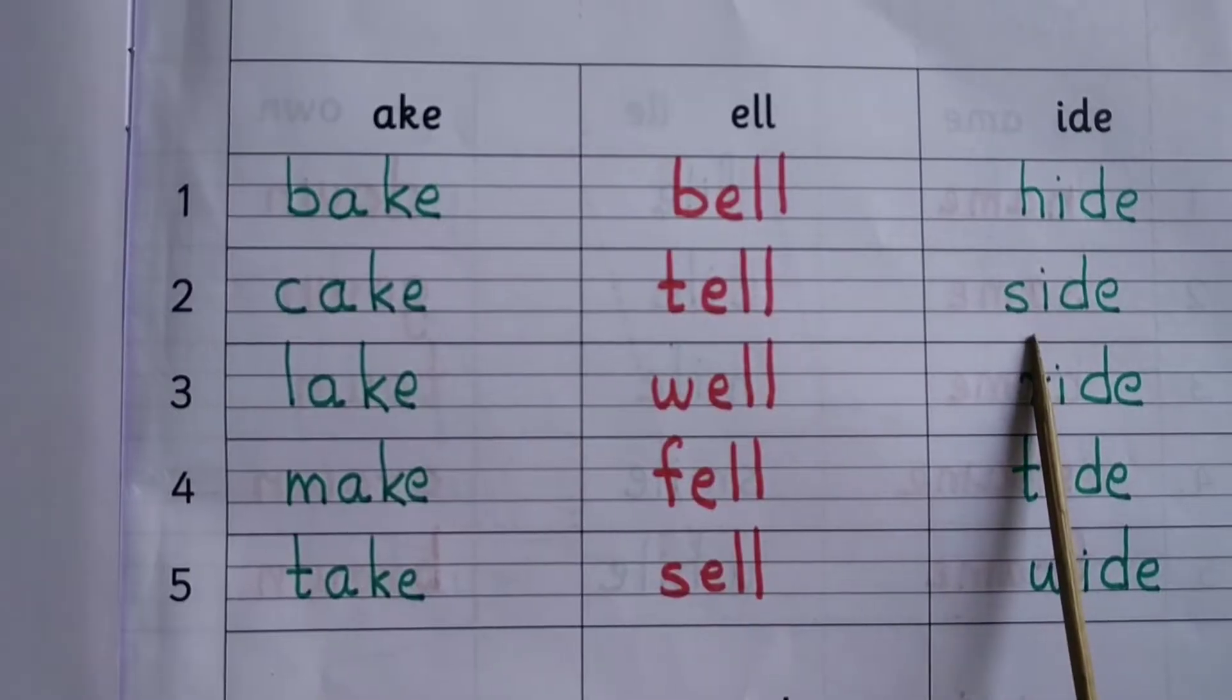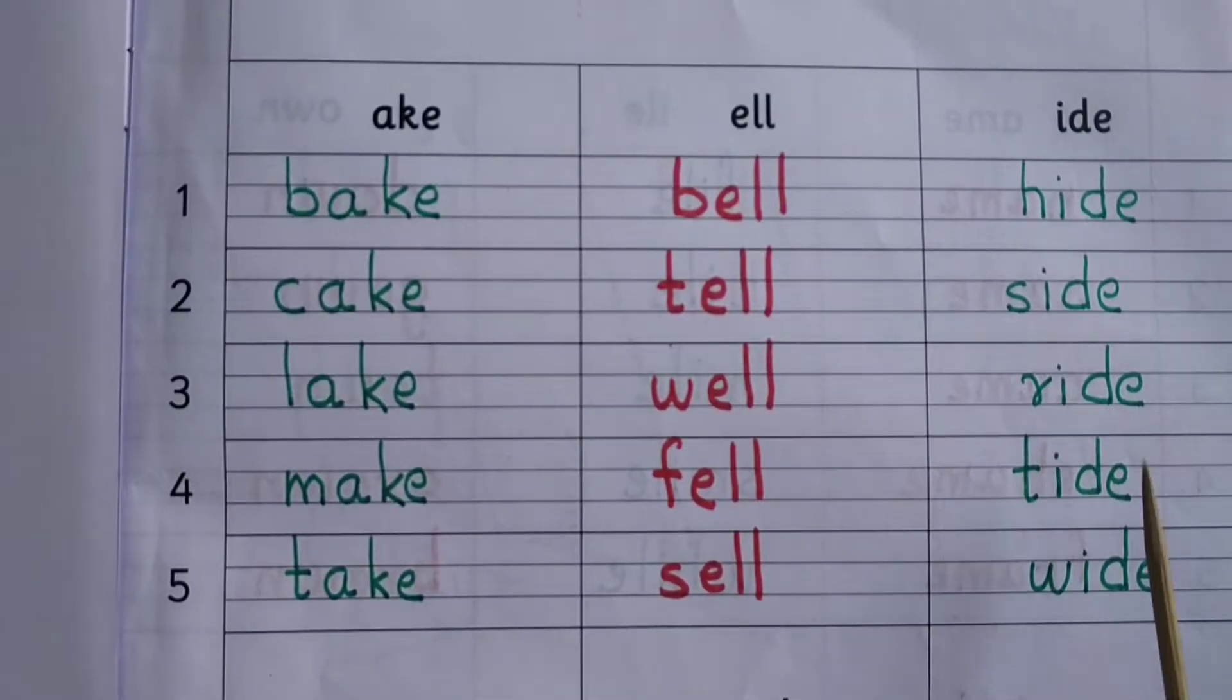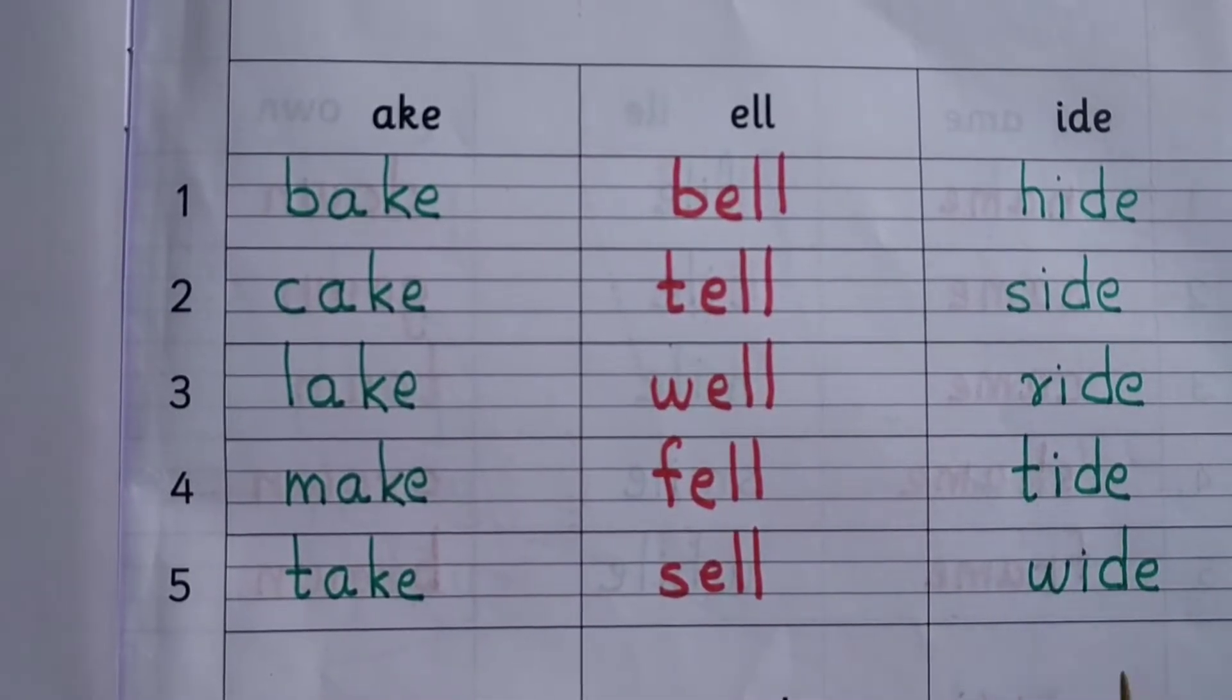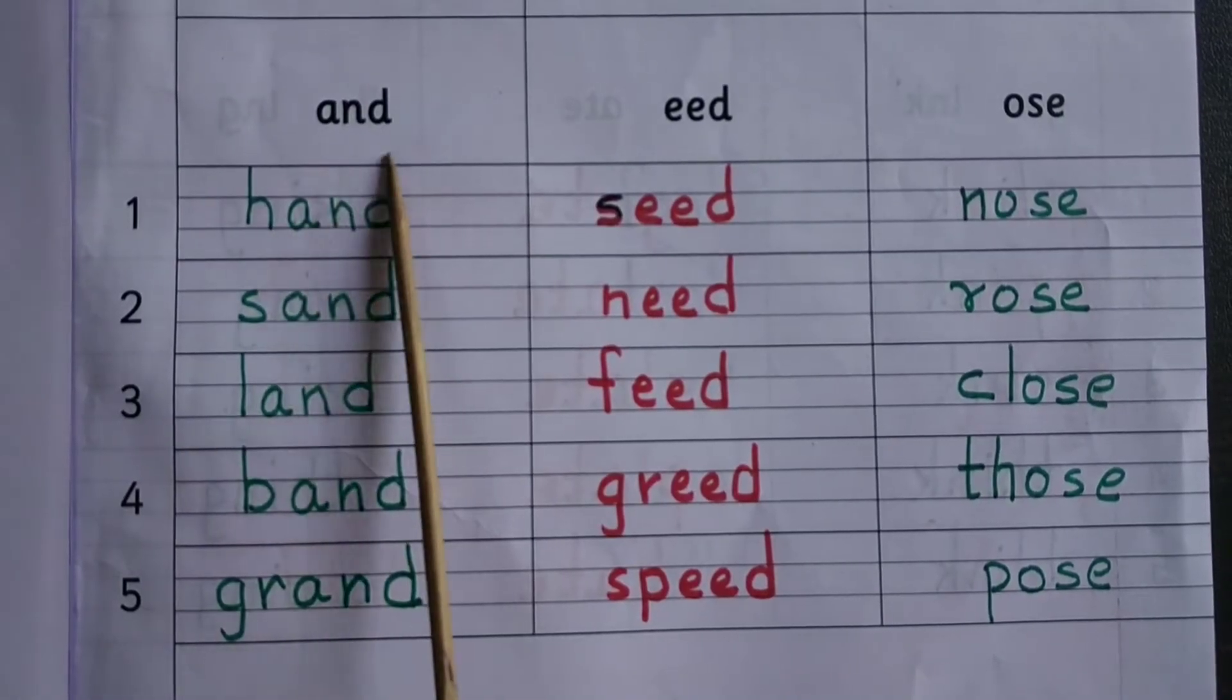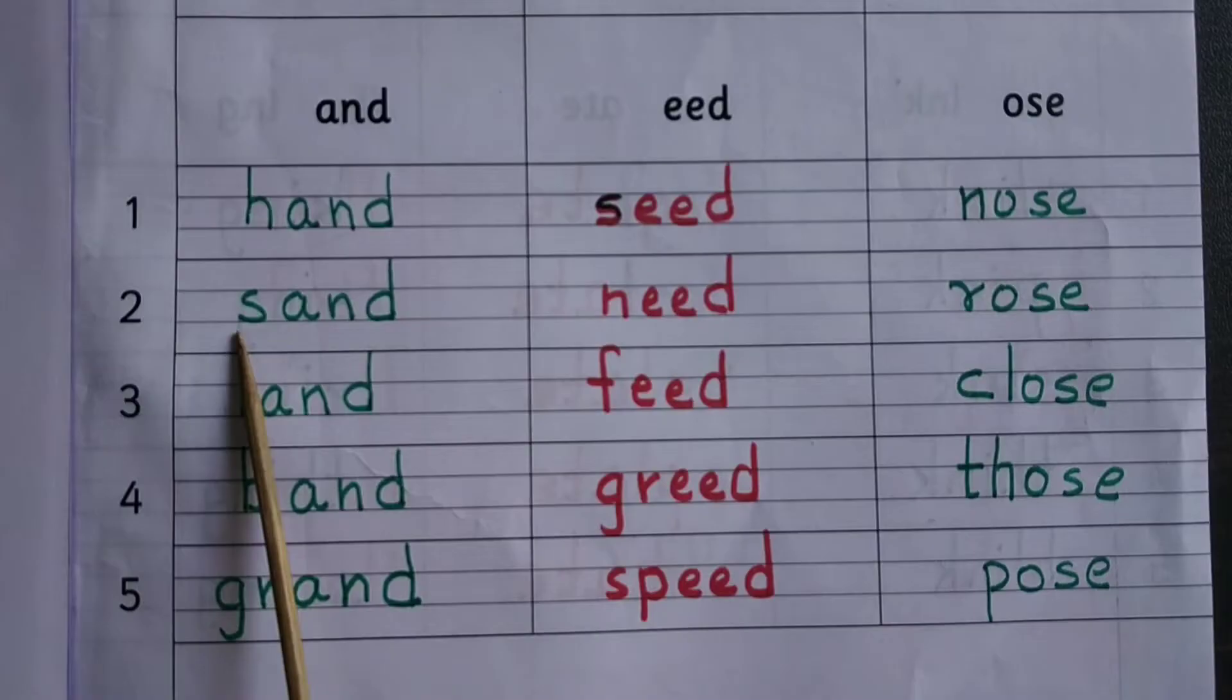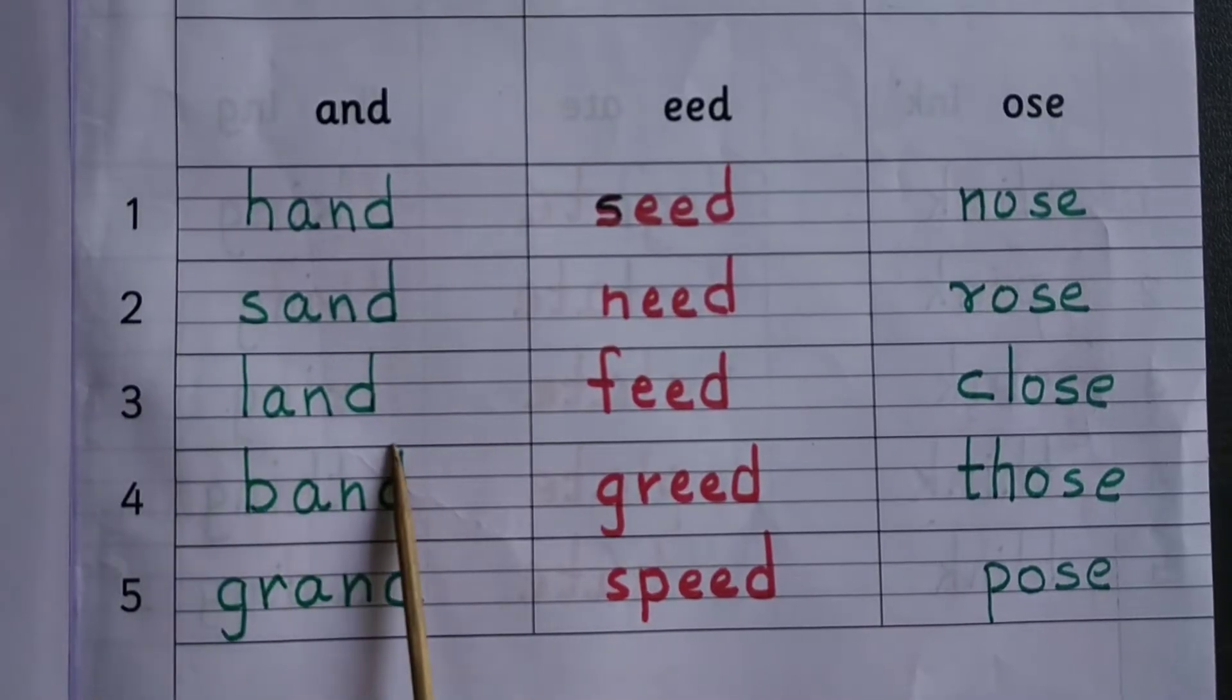Hide, side, ride, tied, wide. A-N-D: hand, sand, land, band.